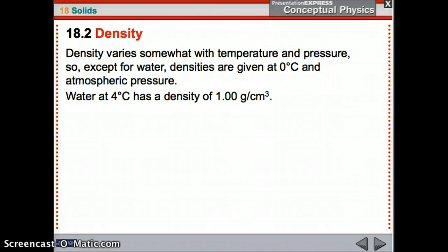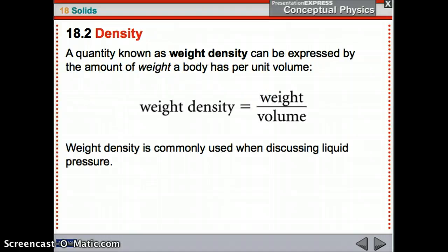Density does vary a little bit with temperature and pressure. Say you take something up to a really high altitude, it's going to have a slightly different density, even though you haven't really changed the properties of it. But generally speaking, we give densities at zero degrees Celsius and atmospheric pressure. Water is special. We use water's density at four degrees Celsius because it has a nice round number of one gram per centimeter cubed.